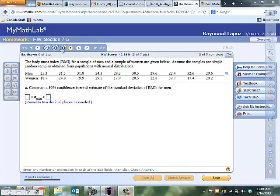This is problem number five from section 7-5. It says the body mass index for a sample of men and a sample of women are given below. Assume that the samples are simple random samples obtained from populations with normal distributions. So here's the data set for men and for women. They want us to construct a 90% confidence interval to estimate the standard deviation of BMIs for men. That's part A.